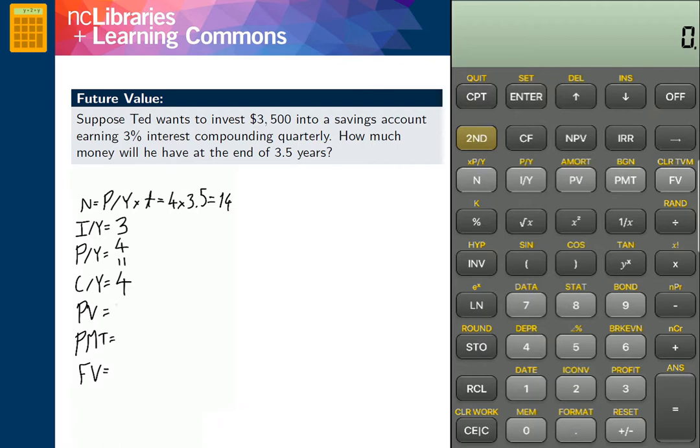Our present value, PV, is 3,500. We will enter this as a negative number because it is an investment.